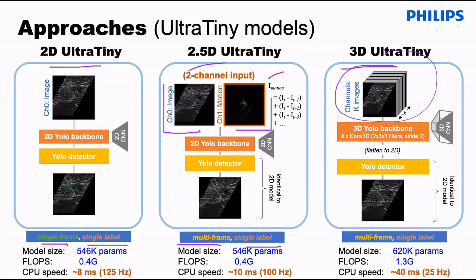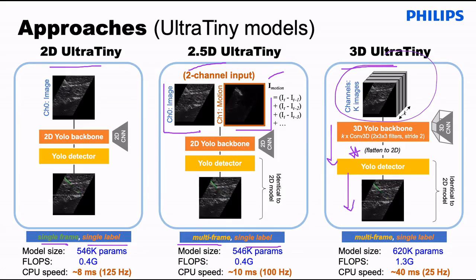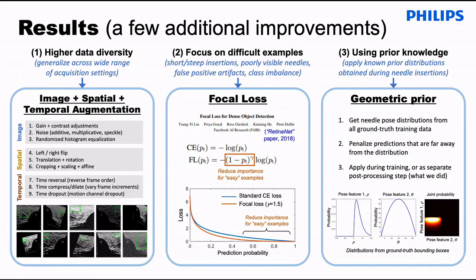The third approach was the 3D ultra-tiny YOLO model. Here we apply a spatial temporal convolution to a stack of input frames, and using 3D convolution, we convolve out the temporal dimension until we reach a 2D feature map that we then feed to the YOLO detector. This model takes multiple frames as input and produces a single label for the final frame in the sequence. We also looked at various additional improvements, including applying spatial and temporal augmentations, using focal loss, and including prior knowledge in the form of a geometric prior, where we penalize predictions far away from some known distribution.